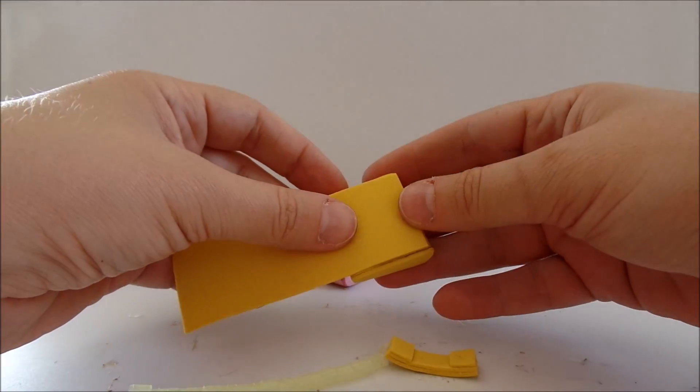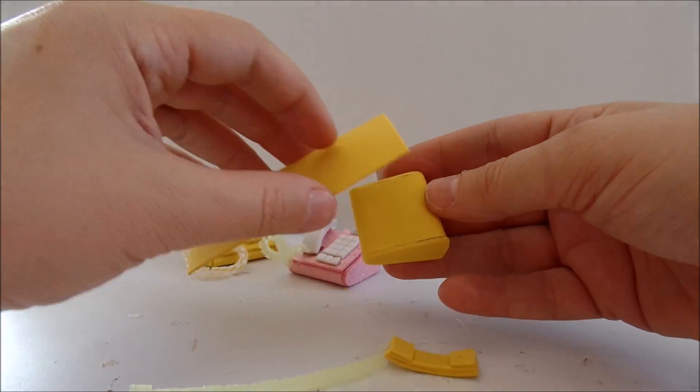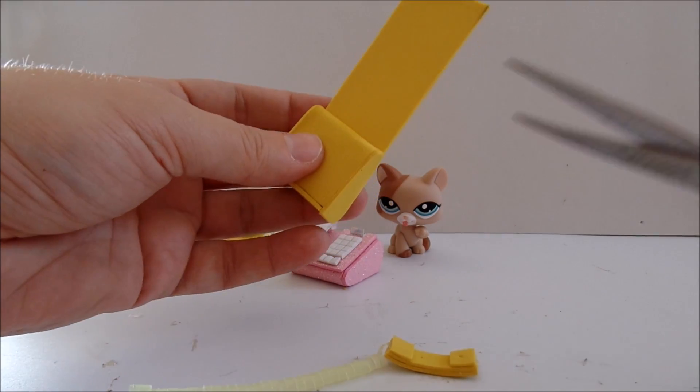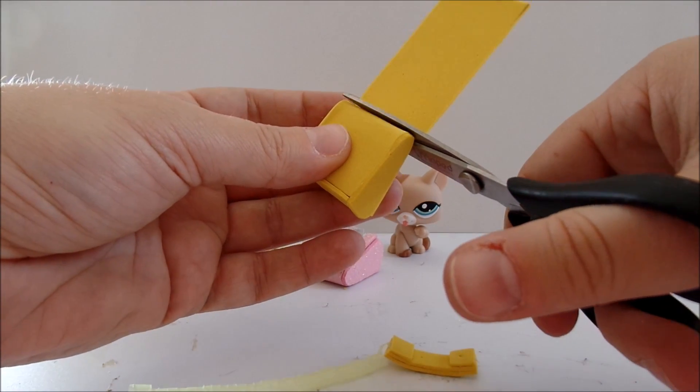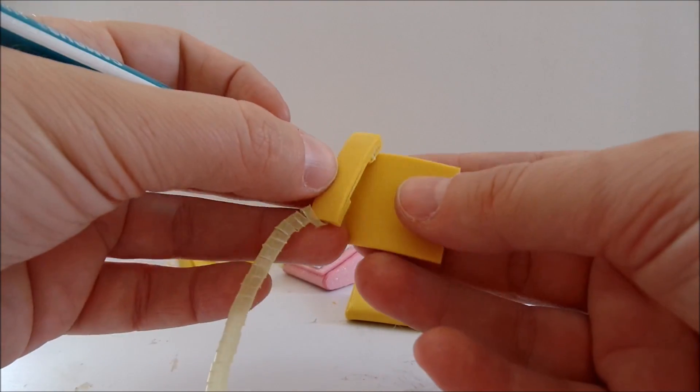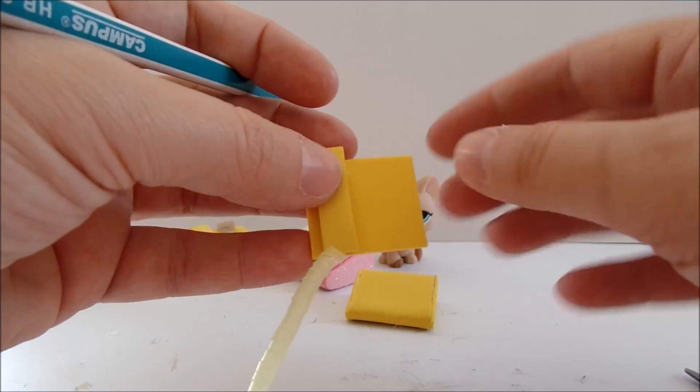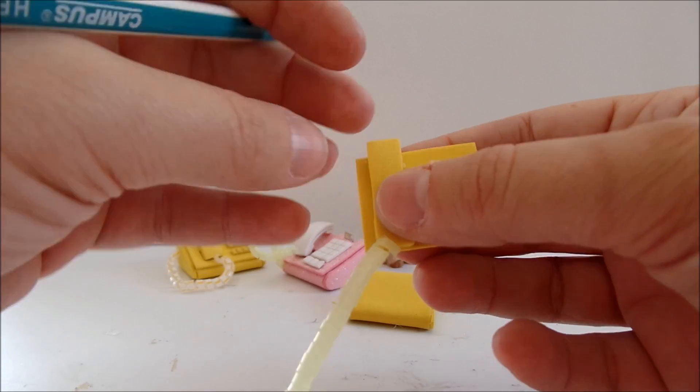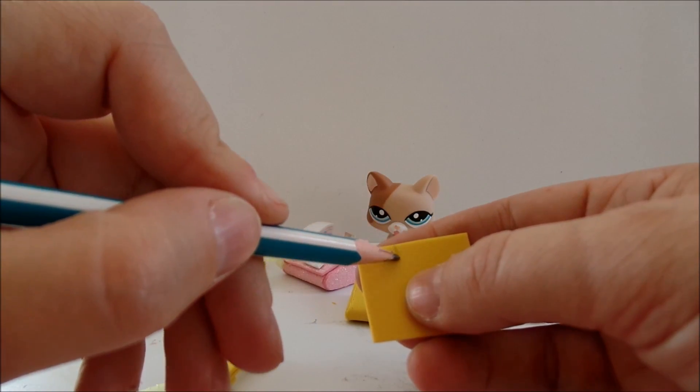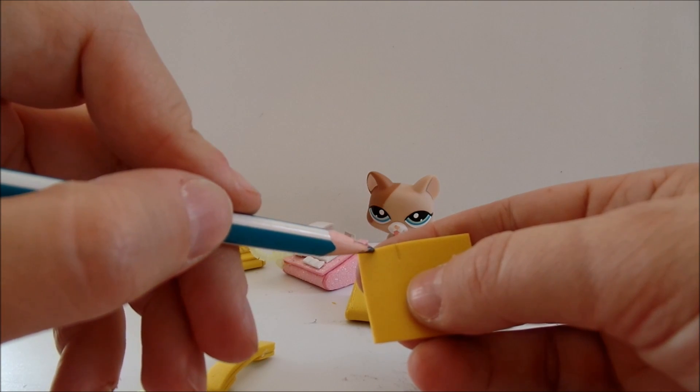Now take another strip of foam. It should cover the top of the phone. Here we need to make a few cuts. First of all we want our phone to hold the handset. That's why we will cut half a square here.